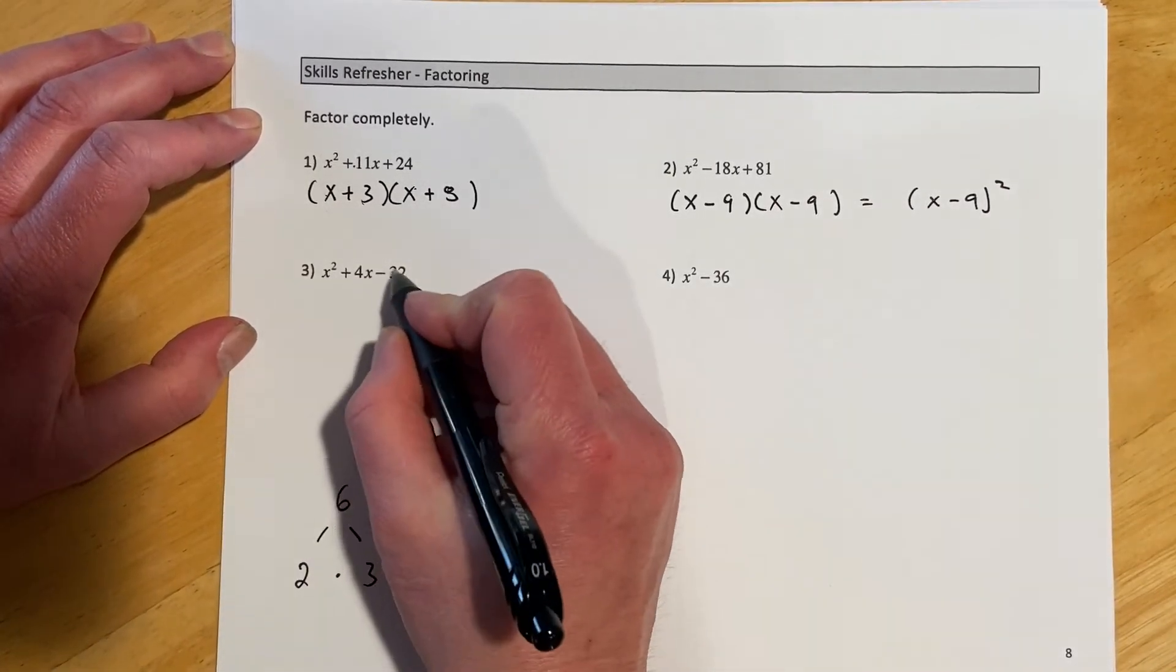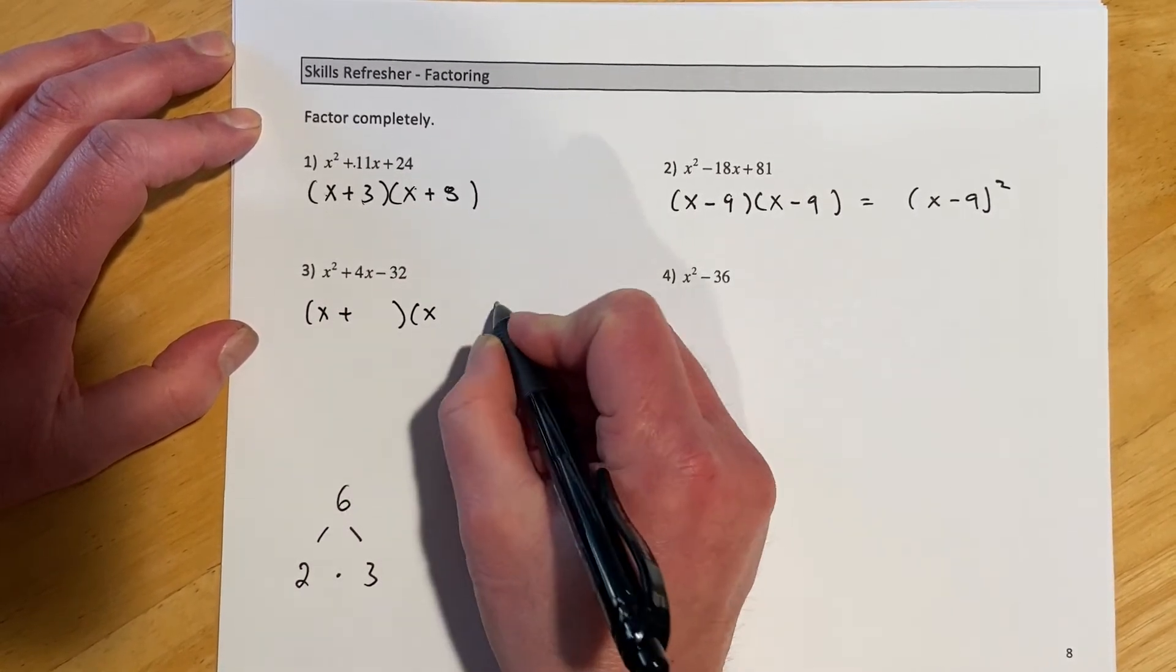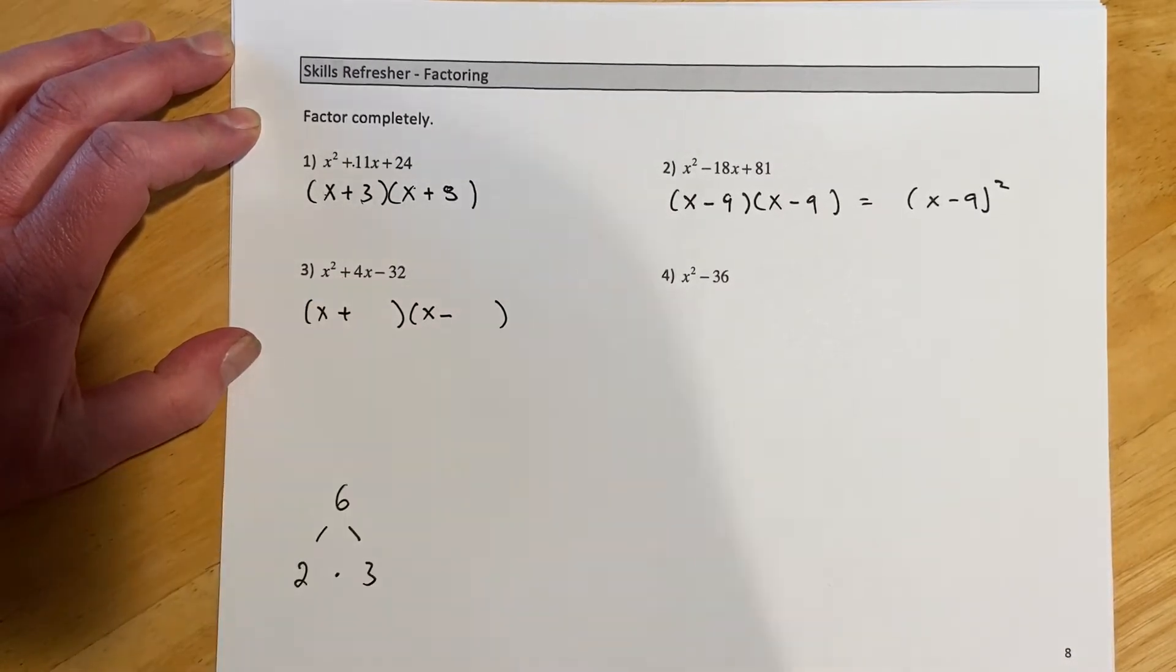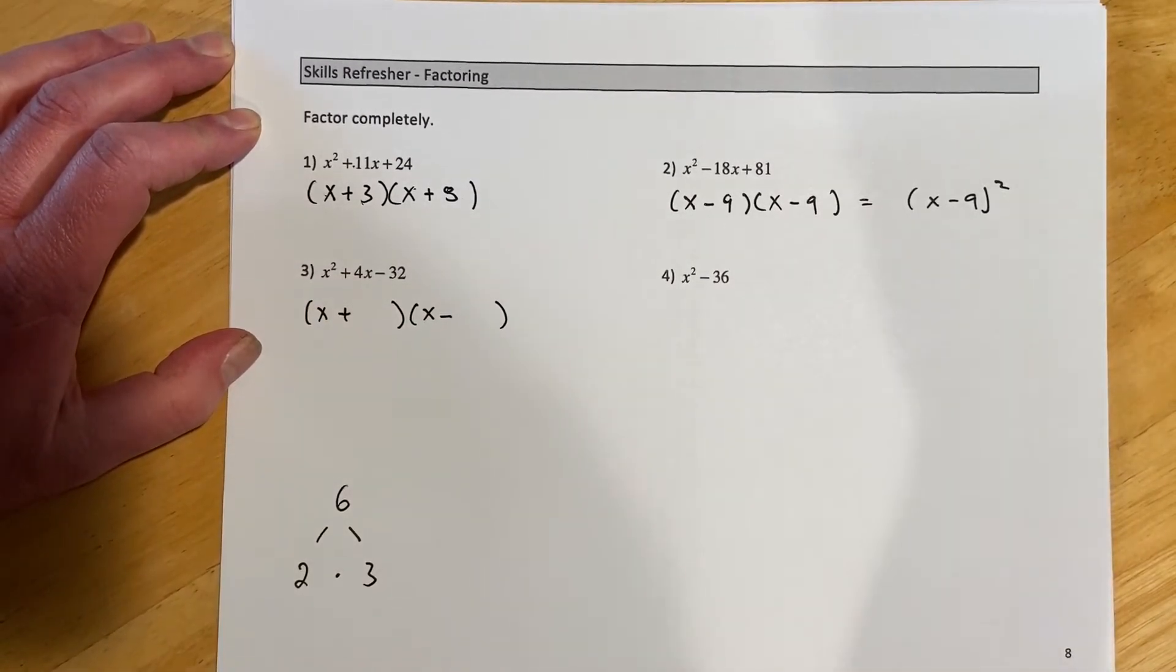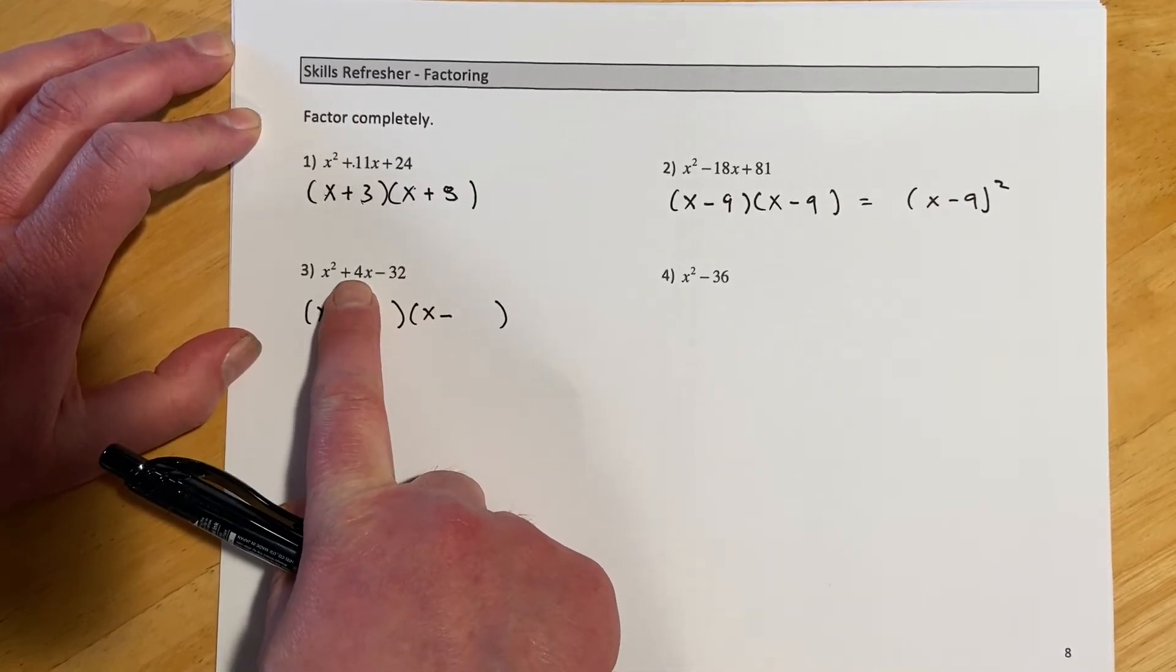This one, notice that one is multiplying to a negative value, so that means we're going to have one positive and one negative. And the sign in the middle tells you what sign the big number is going to take. So we're looking for two things that multiply to be 32 and add to be 4.